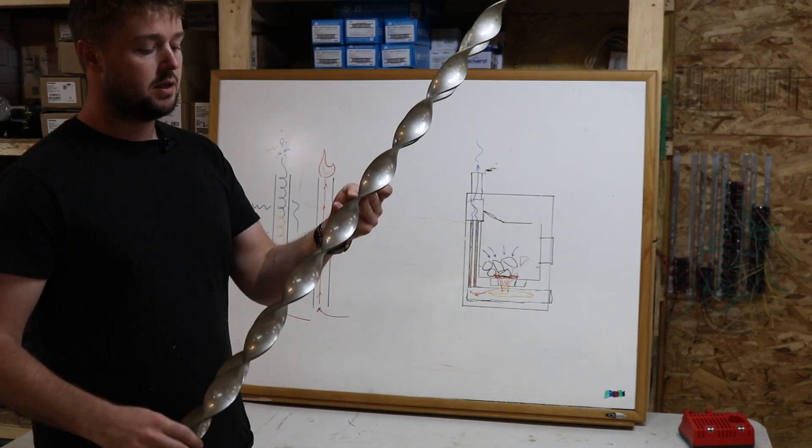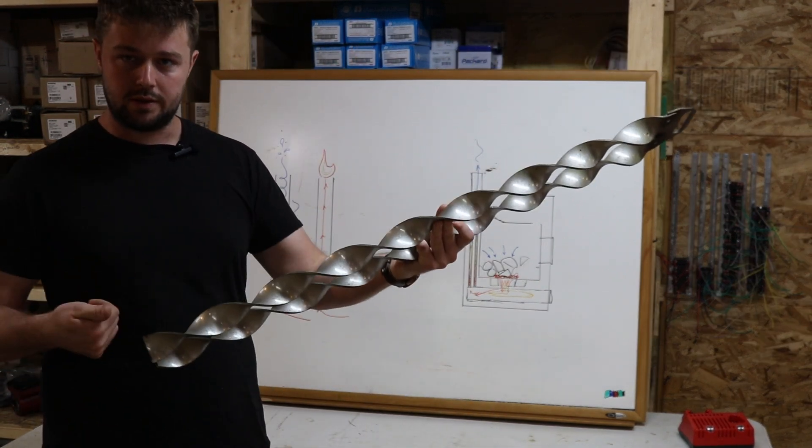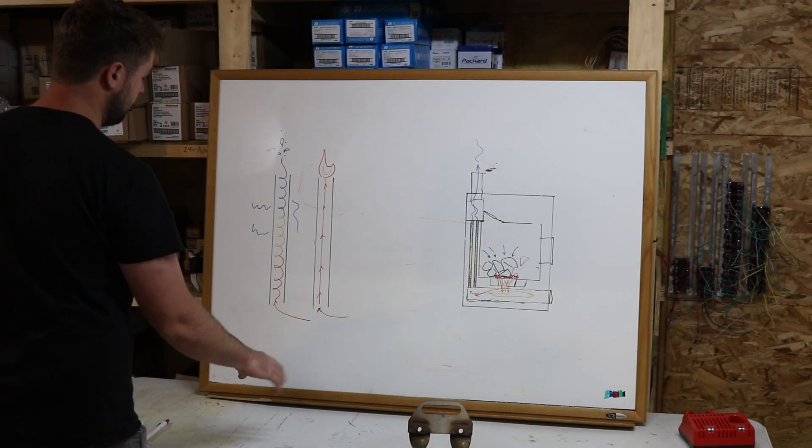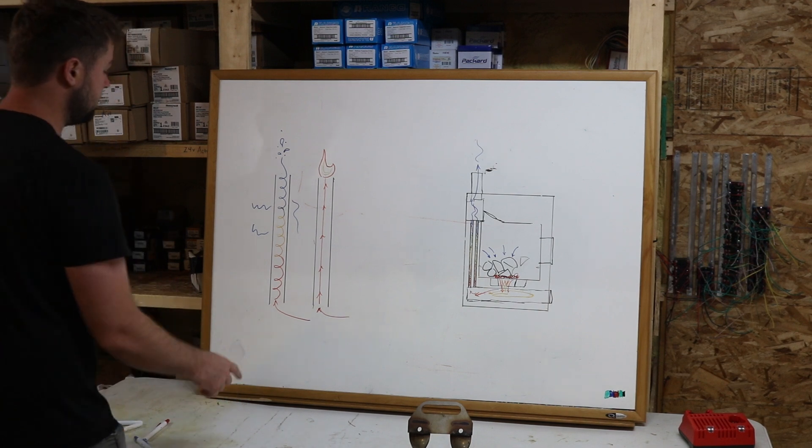Here's a turbulator. You can see it's just a flat piece of metal that's been twisted. On this other side here, I have an example of what the air is doing with a turbulator in the exhaust tube.